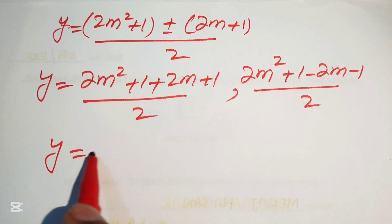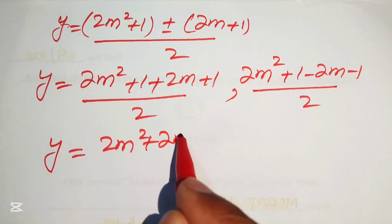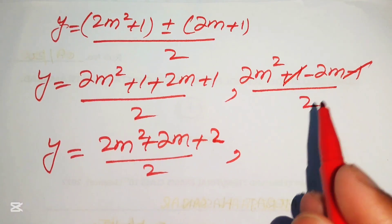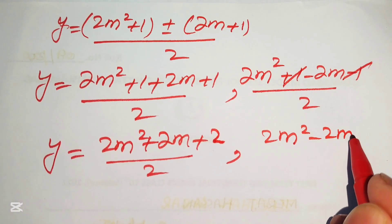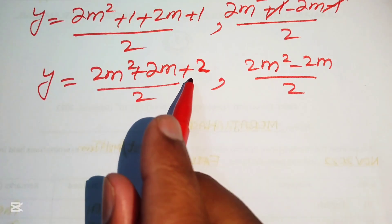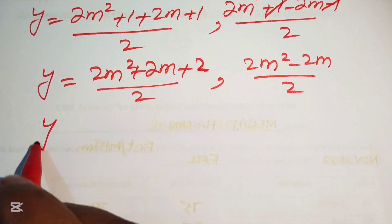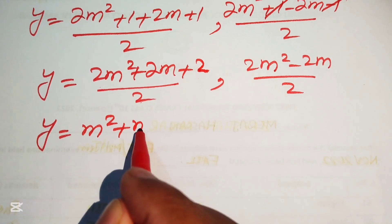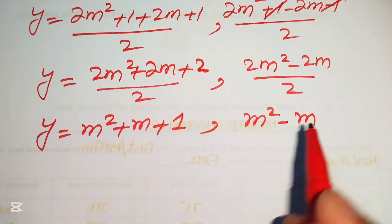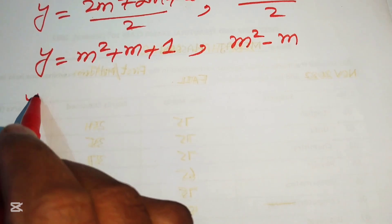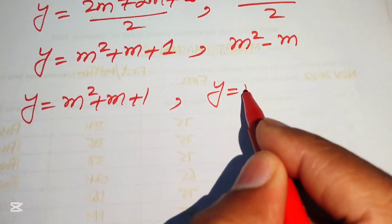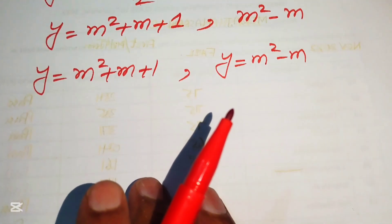Simplifying Case 1: (2m² + 2m + 2) / 2 = m² + m + 1. Simplifying Case 2: (2m² - 2m) / 2 = m² - m. So the two values of y are: y = m² + m + 1 and y = m² - m.